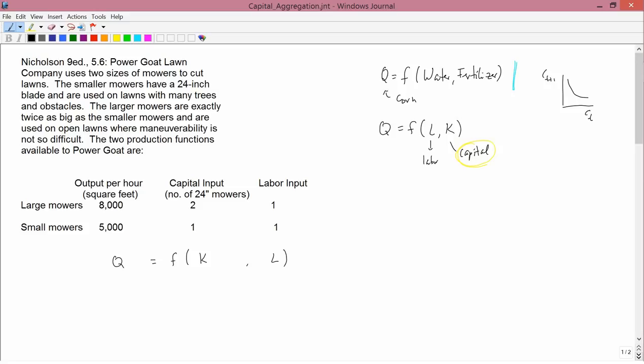And indeed, if you're going to write the production function as Q equals F of K and L, it's very clear that there are lots of different types of capital goods, of machines, or things like machines. Well, not all capital goods are machines.